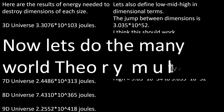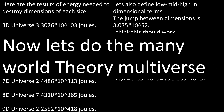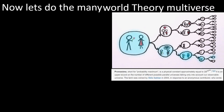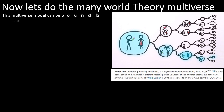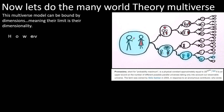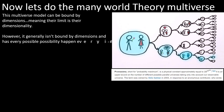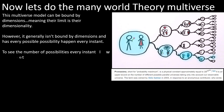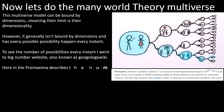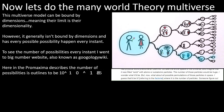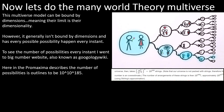Now let's do the mini world theory multiverse. This multiverse model can be bound by dimensions, meaning their limit is their dimensionality. However, it generally isn't bound by dimensions and has every possibility happen every instant. To find the number of possibilities every instant I went to the big number website, also known as Googology Wiki. There, the pro maxima describes the number of possibilities as 10 to the power of 10 to the power of 185.